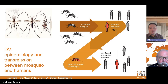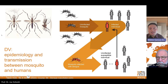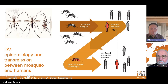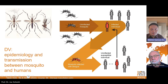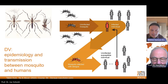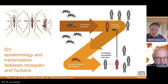Climate is an important factor for dengue transmission. And because of climate change and all its effects, we are seeing more problems with dengue and other viruses transmitted by mosquitoes.